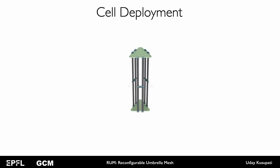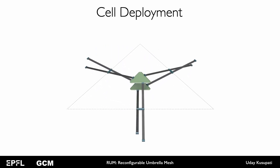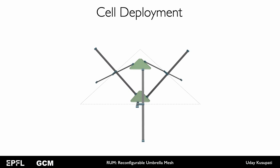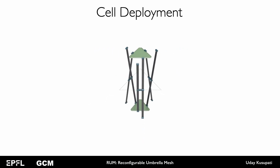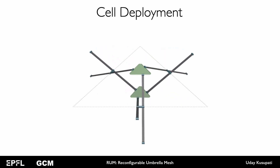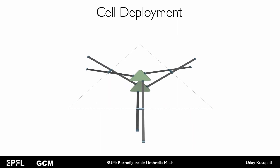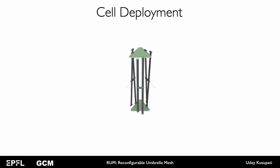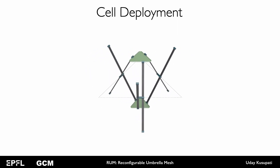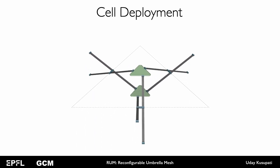Inspired from the mechanism that deploys an umbrella, a cell pushes material from out of the surface plane into it. It has two flat plates connected by vertical scissor linkages. As you bring the plates closer, the cell expands in plane. Note that the height of the cell controls how much the cell expands. Taller the cell, more is the expansion.